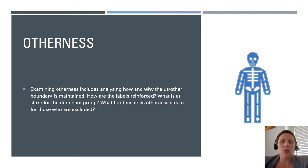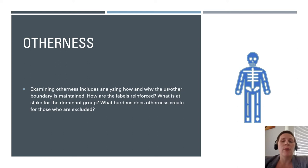Otherness means that people can end up being defined by the fears or assumptions of the dominant group rather than by what they actually do or believe. Examining otherness includes analyzing how and why the us-other boundary is maintained, how labels are reinforced, what is at stake for the dominant group, and what burdens otherness creates for those who are excluded. That quote from Bhabha comes from The Location of Culture, published in New York by Routledge Publishing.